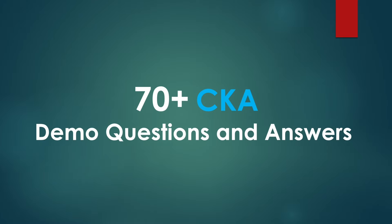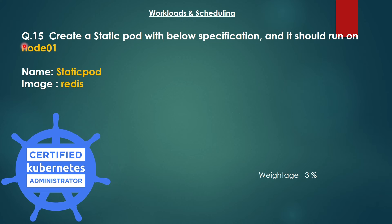Welcome to the CKA series, this is part 3 in this series, and we will cover some more scenarios in this video. The 15th question is to create a static pod with the below specifications, and it should run on node01. The name should be static-pod, the image should be redis, and the weightage of this question is 2%. Without delay, let's go to the cluster.